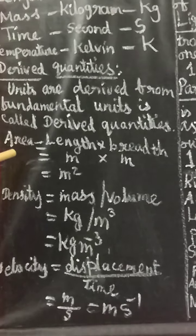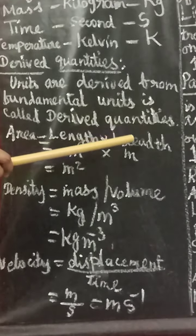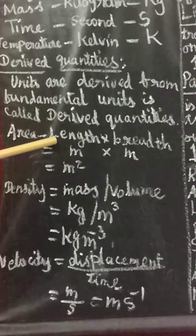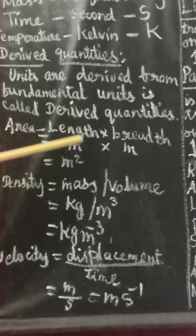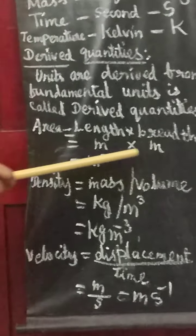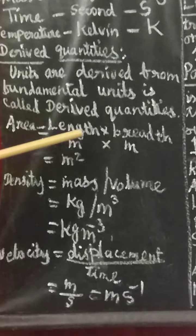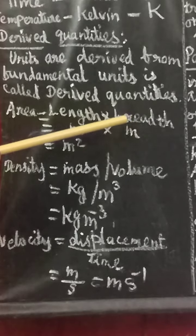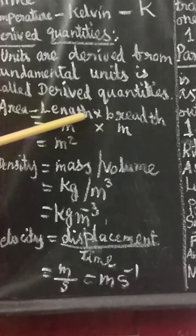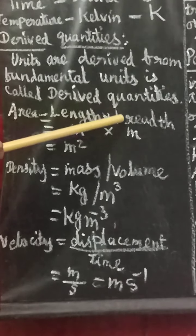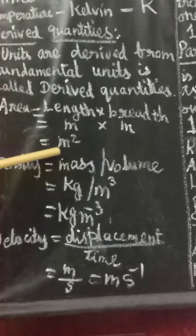For example, area. The formula for area is: area = length × breadth. The unit of length is meter, and the unit of breadth is also meter. Multiplying the two units gives meter × meter = meter squared. Length and breadth are both fundamental quantities, and area is derived from them — that is called a derived quantity.